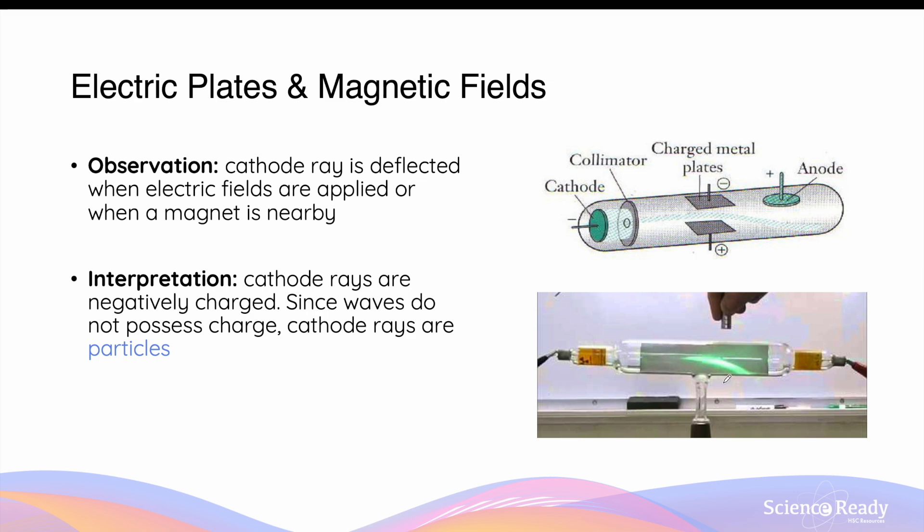In the bottom diagram, a permanent magnet is placed nearby the cathode ray, and as a result, the trajectory of the cathode ray is also deflected towards the bottom. The deflection of the cathode ray in the presence of electric fields and magnetic fields suggests that the cathode rays are charged, specifically negatively charged, because they are deflected towards the positively charged metal plates.